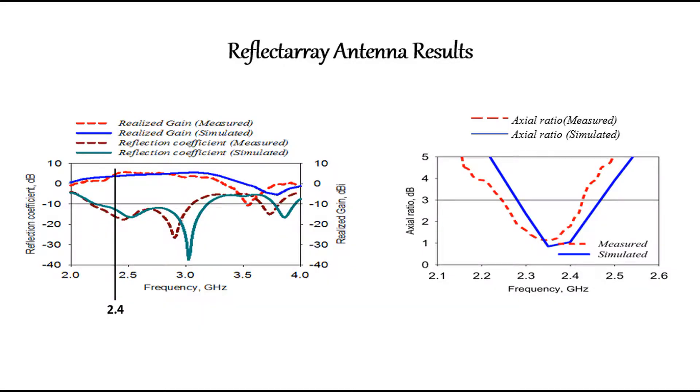We are going to take a look at some of the simulated and measured results for this antenna. The graph on the left shows the reflection coefficient and the gain of the antenna. The measurement indicates this circular polarizing antenna exhibits a gain of more than 2 dBi.